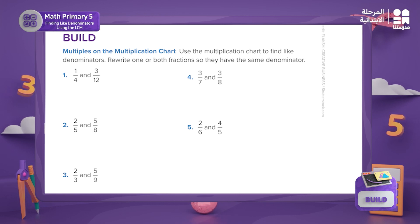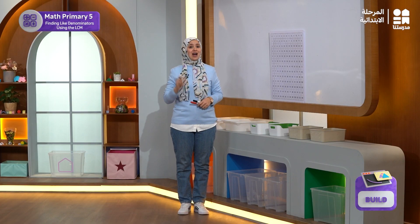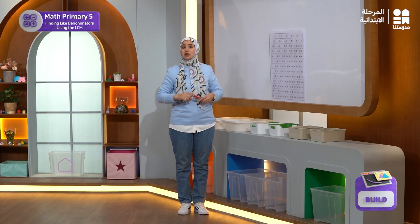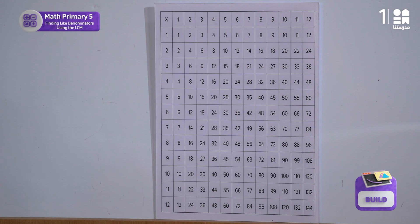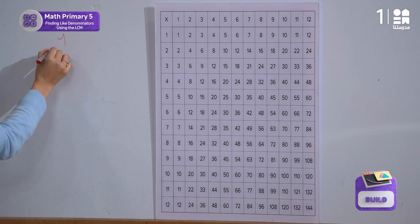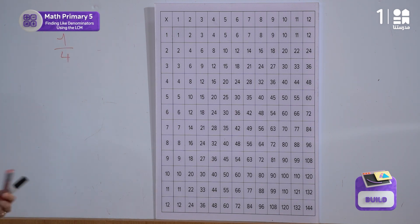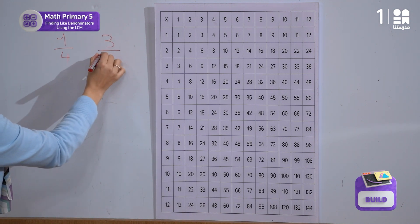We will solve together problem 1, in which we are going to have two equivalent fractions. Let's write them together. The first fraction is 1 over 4, and the second fraction is 3 over 12.